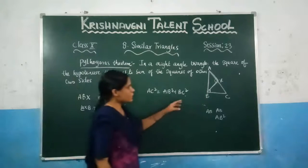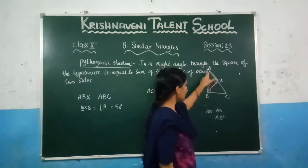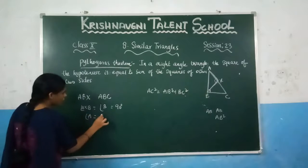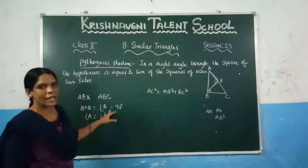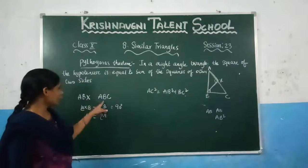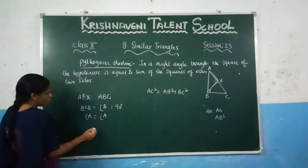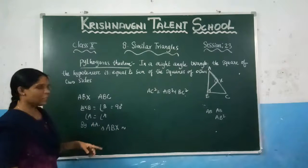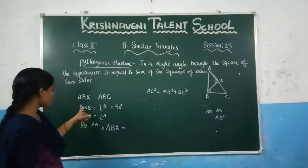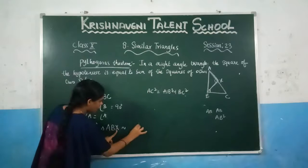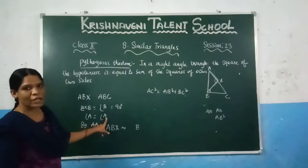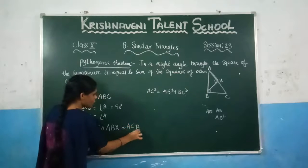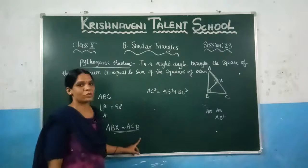Now, if you consider the smaller triangle ABX, angle A is there. And if you consider the bigger triangle ABC, angle A is also there. So angle A is the common angle. You can write: angle A equals angle A, because it is the common angle. By AA similarity, these two triangles are similar. So triangle ABX is similar to triangle ACB — checking which angle corresponds to which: X corresponds to B, and A corresponds to A, leaving C.